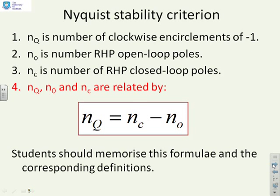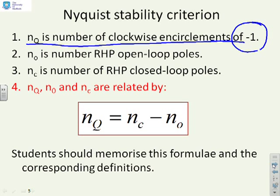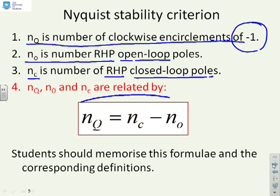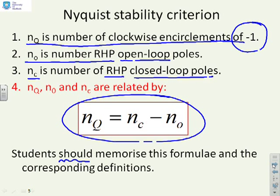Nyquist stability criterion summary: define Nq as the number of clockwise encirclements of minus-1 — that's really key. N0 is the number of right-half-plane open-loop poles, and Nc is the number of right-half-plane closed-loop poles. These three numbers are related by the formula: Nq equals Nc minus N0. You should memorise this formula; it's unlikely you'll have to derive it, but you will need to use it.